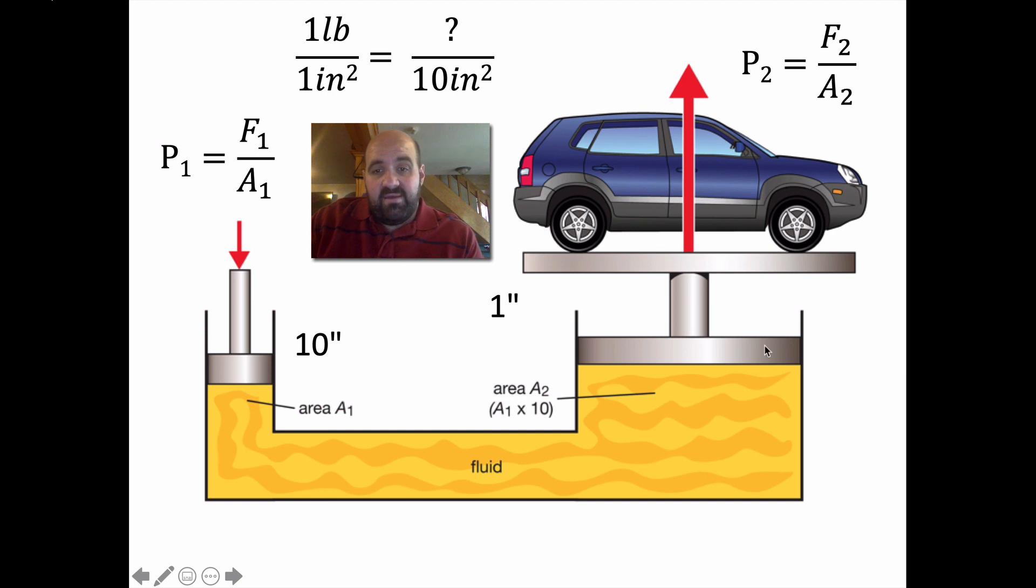Well, if this area over here is 10 times the size of this one, what output force are you going to get? An input force of 1 pound over 1 inch squared is going to lead to what output force over 10 inches squared? Well, 1 over 1 equals what over 10? The only way you get this being equal is putting a 10 here. 10 over 10 is 1.